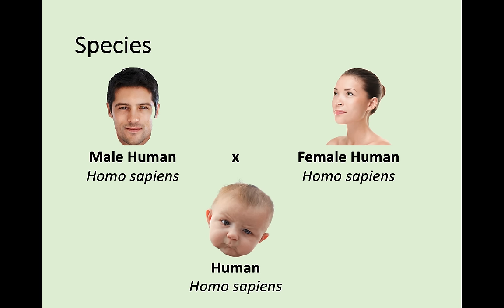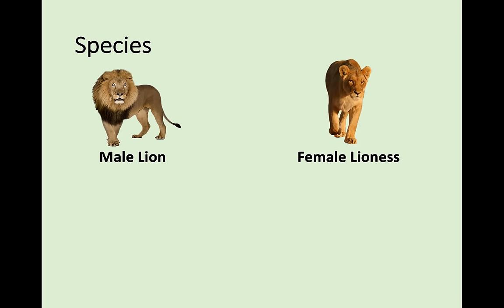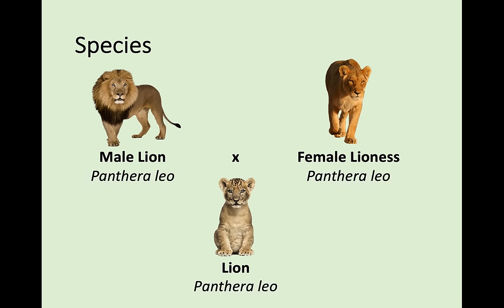This is because they are all part of the same species — we are all Homo sapiens. Similarly, a male lion reproducing with a female lioness produces a lion cub — they are all Panthera leo — and when the cub grows up, it will be able to reproduce and produce more lions.